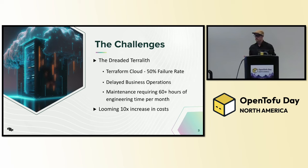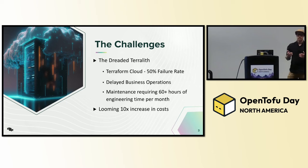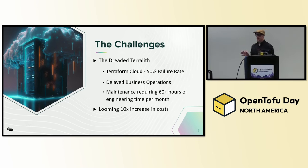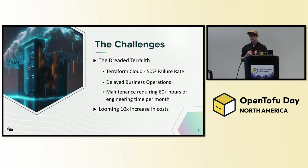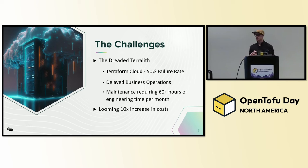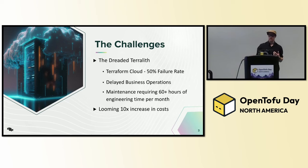But they started to hit some serious problems. They ran into the dreaded TerraLith problem. A TerraLith is a state file that grows too large. You run into various problems with that: blast radius issues, your plan and apply times running too slow, and the inability to apply principle of least privilege — enabling one person to act on parts of the infrastructure and another person to act on separate parts. TerraLith is something we deal with as a consulting firm a ton.